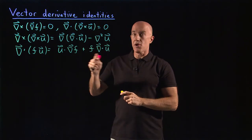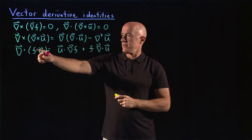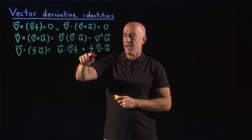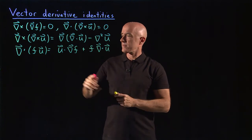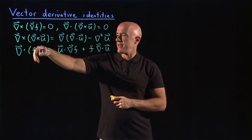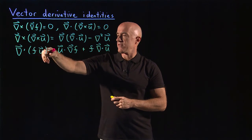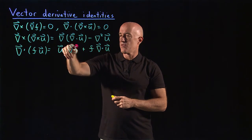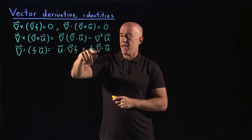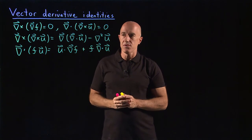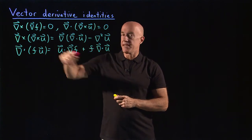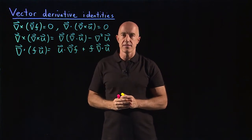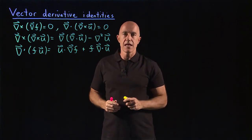The third vector identity is del dot fu equals u dot del f plus f del dot u. The divergence of a scalar field f times the vector field u is equal to u dot the gradient of f plus f times the divergence of u. The left hand side is a scalar field.